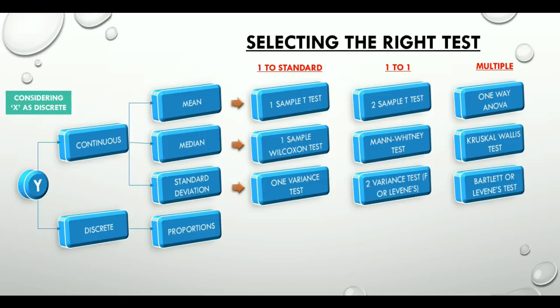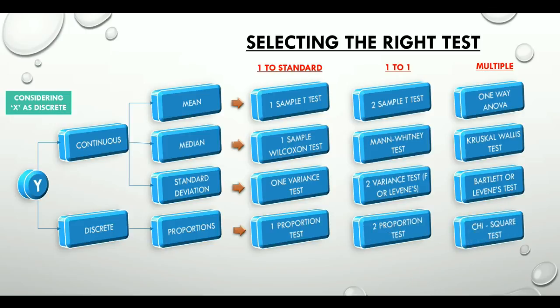Now, for a discrete y and comparing proportions, we have one proportion test, two proportion test, and chi-square test.